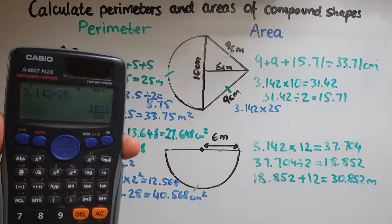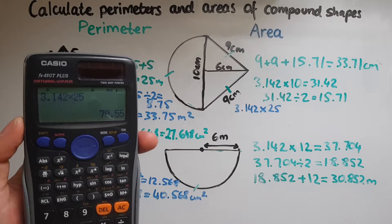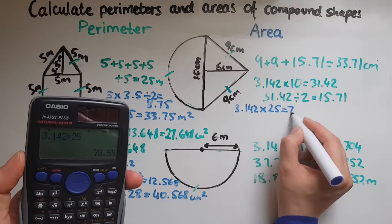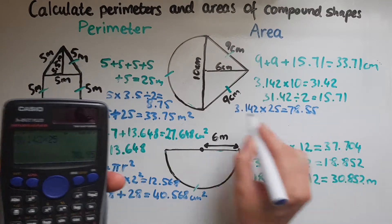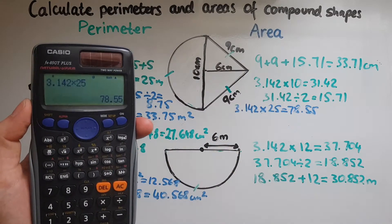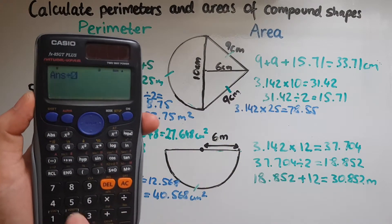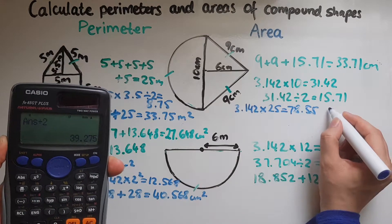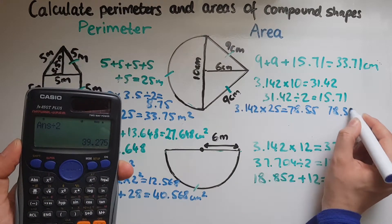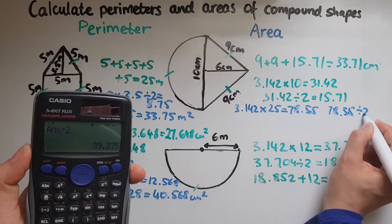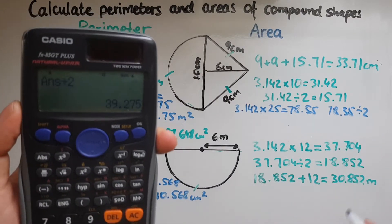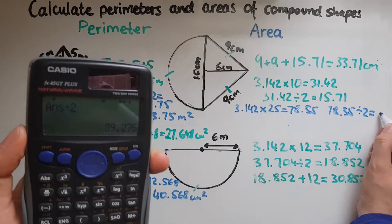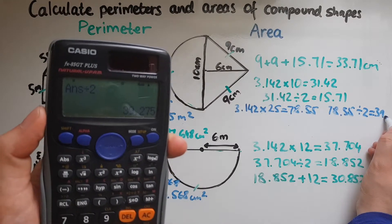Three point one four two times r squared. R is five, half diameter, five squared is twenty five. So three point one four two times twenty five which is seventy eight point five five. But this is not a full circle so I'm going to have to halve that now. Divided by two that gives us thirty nine point two seven five.